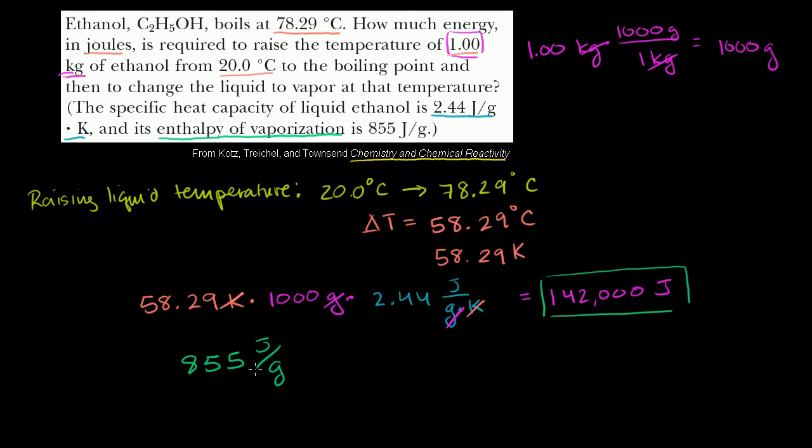Assuming that it's already at the temperature of vaporization. Assuming that it's already at its boiling point. How much extra energy per gram do you have to add to actually make it vaporize? So we have this much, and we know we have 1,000 grams. We know we have 1,000 grams of ethanol.